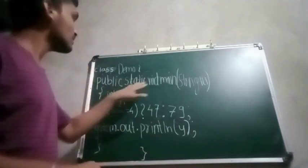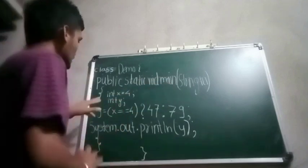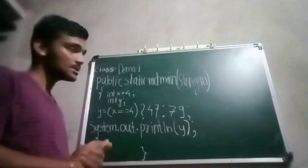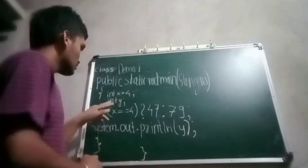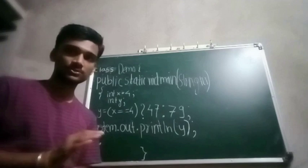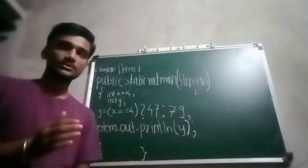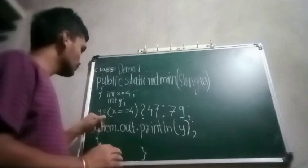This is our main method. In this I have declared x variable of type int having value 4. I have declared y variable so that it can be assigned the ternary value while executing, which we will discuss next.